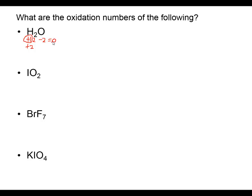If I have iodine dioxide IO₂, oxygen should be a negative two and there are two of them giving a total of negative four. I don't know the rule for iodine, so I put in one unknown x. One x minus four equals zero for the overall charge, so x equals a positive four in iodine dioxide.